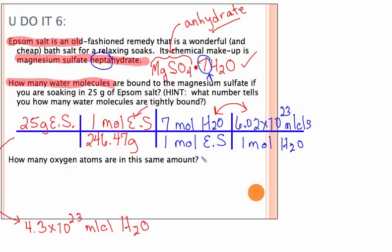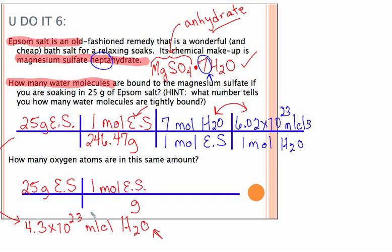Now, the next question says, how many oxygen atoms are in this same amount? Now, you really could start from here if you wanted and go to oxygen. I'm simply going to start from the beginning and set it up for you again as if it was its own little problem. I have grams of Epsom salt, and I want to get rid of grams. Mass to moles, use molar mass. So for every one mole of the Epsom salt, I have 246.47 grams.